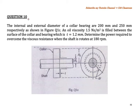This is question 10. The internal and external diameter of a collar bearing are 200 mm and 250 mm respectively, as shown in the figure here.